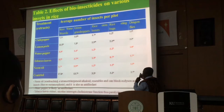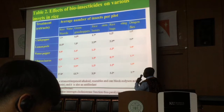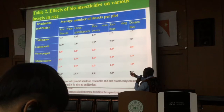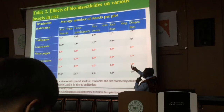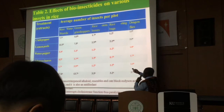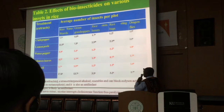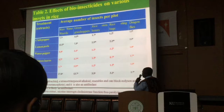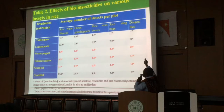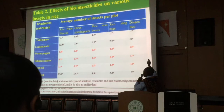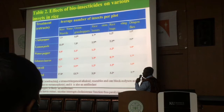In the field, after treatment, we observed that water pepper, tobacco leaves, and neem oil were efficient in controlling rice insects — including the rice water weevil, green grasshopper, rice termites, green stem borers, and others. These three extracts — water pepper, tobacco, and neem — demonstrated the best insecticidal properties. Notably, there was a presence of beneficial insects in the field, including a large number of dragonflies and spiders.